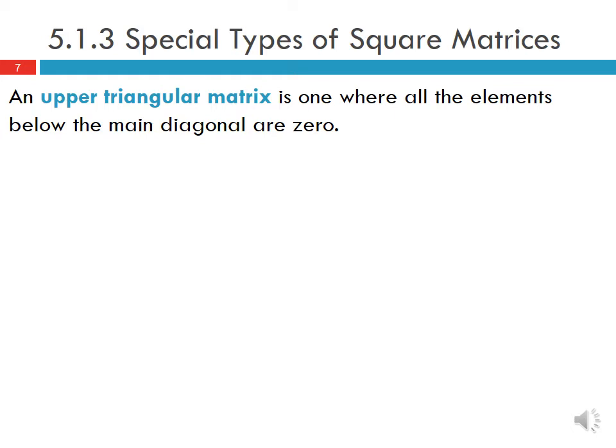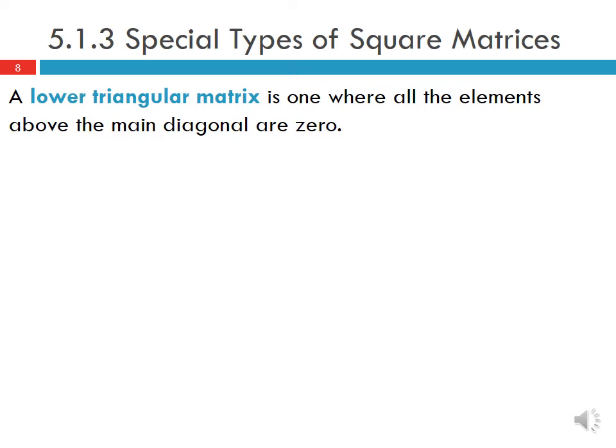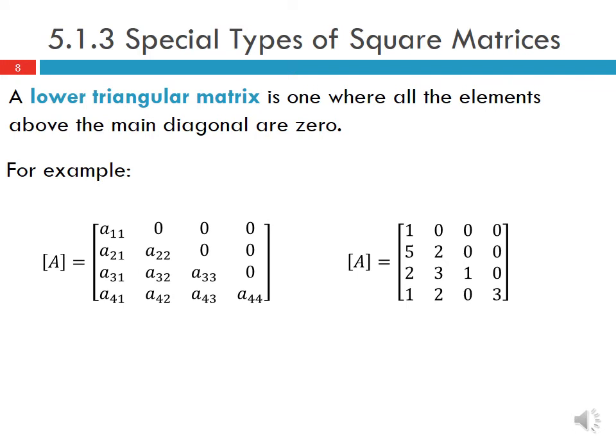An upper triangular matrix is one where all elements below the main diagonal are zero, forming a triangle in the upper portion of the matrix. A lower triangular matrix is one where all elements above the main diagonal are zero — only elements on the lower triangular part can be nonzero. These are shown with 4 by 4 and 3 by 3 examples.